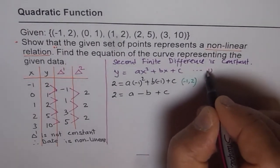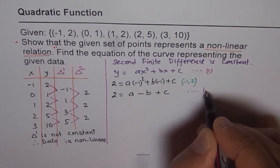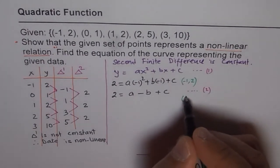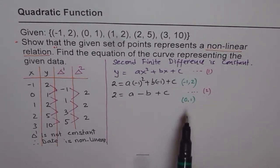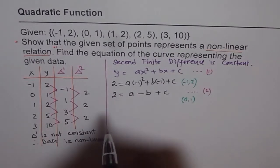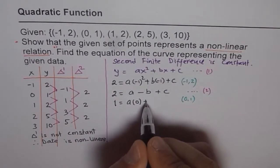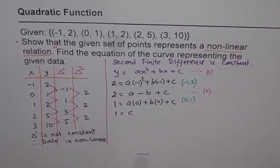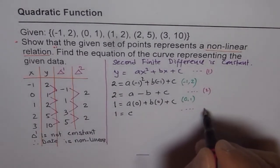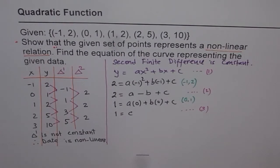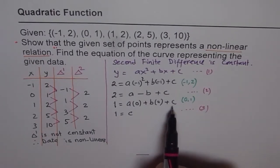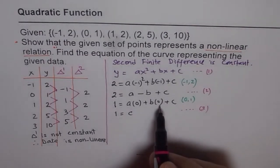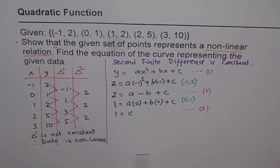Now let's use the second point (0, 1). When we substitute 0 for x, we should get 1 for y. So we get 1 = a(0)² + b(0) + c, which gives 1 = c. This is our third equation, and it is actually the y-intercept. When x is 0, the value of the function equals c. So we get the value of c directly.